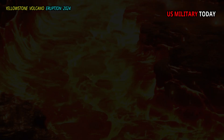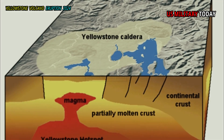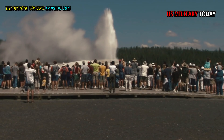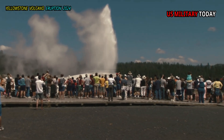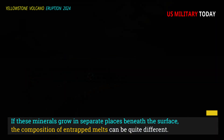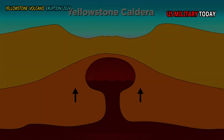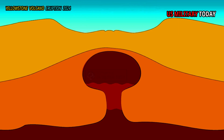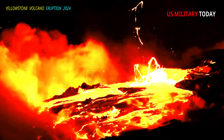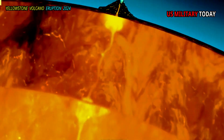In this way, these tiny melt pockets punch above their weight as a scientific tool for understanding magmatic systems. If these minerals grow in separate places beneath the surface, the composition of entrapped melts can be quite different. For instance, magma beneath the southern part of Yellowstone Caldera has a slightly different composition than magma in the northern part, and the enclosed melt inclusions can be used to map out these differences in the magma chamber.